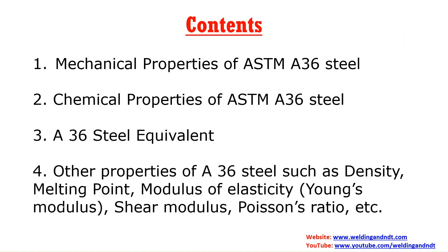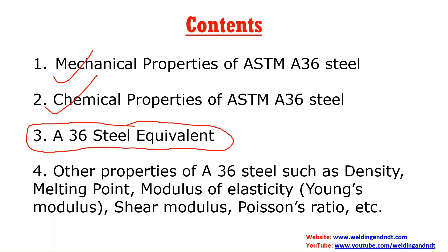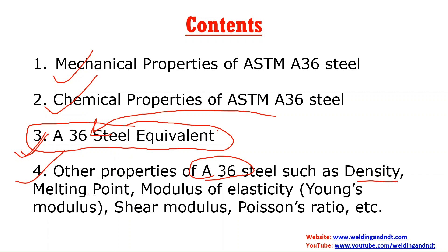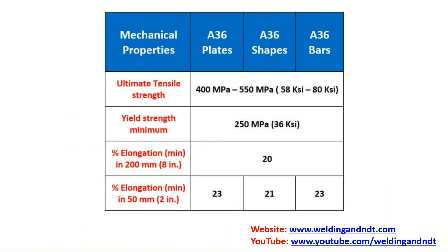The contents of today's video: we will learn about the mechanical properties of SA36 steel, then the chemical properties, then the equivalent steels of SA36 used in different codes — since ASME uses SA36 and ASTM uses A36, we'll explore what other codes use. Finally, we'll also learn about other important properties like density, melting point, modulus of elasticity (Young's modulus), shear modulus, and Poisson's ratio.